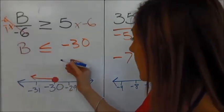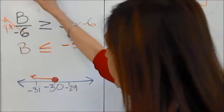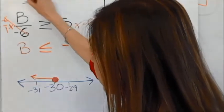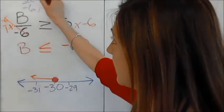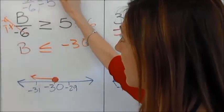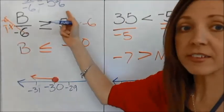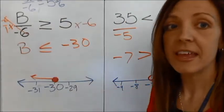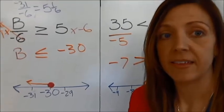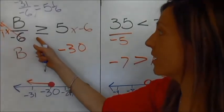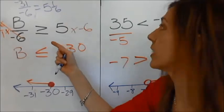Let's plug in negative 31. Negative 31 divided by negative 6 equals a positive 5 and 1/6. And positive 5 and 1/6 is greater than 5. It's 1/6 greater.